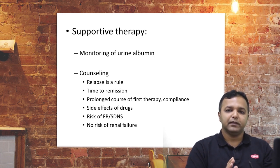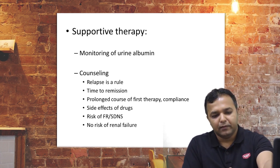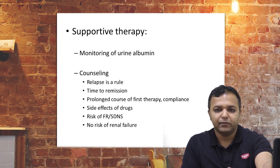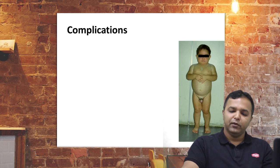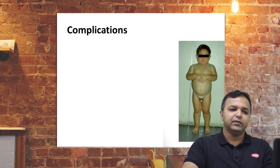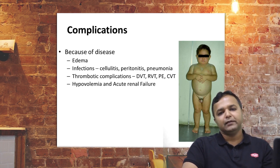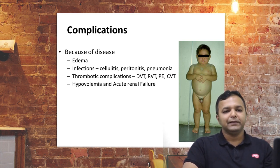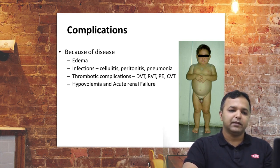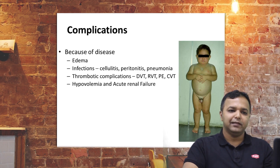Follow-up is the most important part — keeping children on proper follow-up prevents complications. Common complications include severe edema causing scrotal swelling, massive ascites, pleural effusion, pericardial effusion causing respiratory difficulty, and gross facial edema impairing vision. Children are also prone to infections such as cellulitis, peritonitis, and pneumonia. Thromboembolic complications are well known — including deep vein thrombosis, renal vein thrombosis, and cerebral vein thrombosis. If proper fluids are not given, they can develop hypovolemia and acute renal failure.